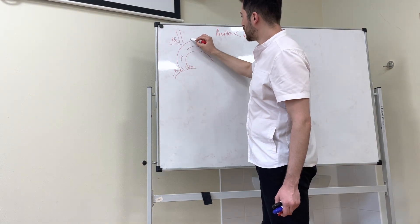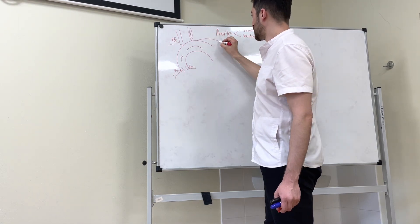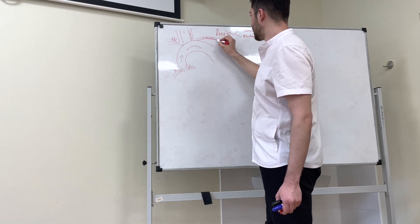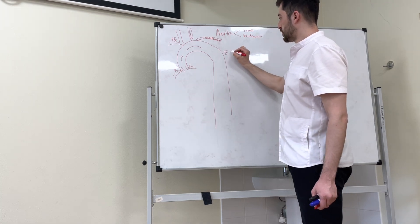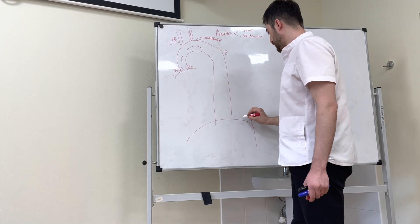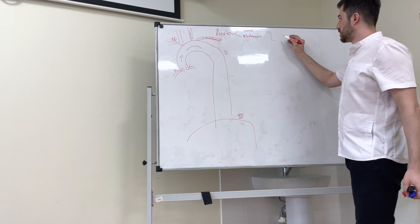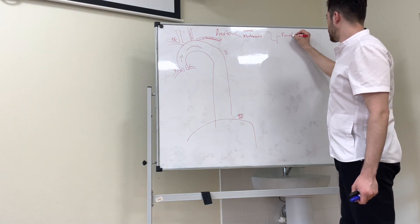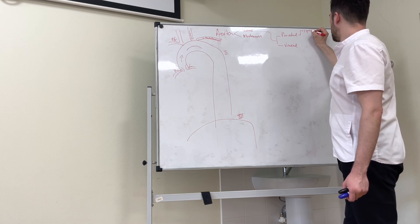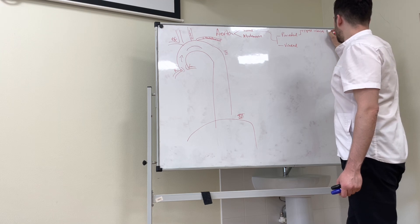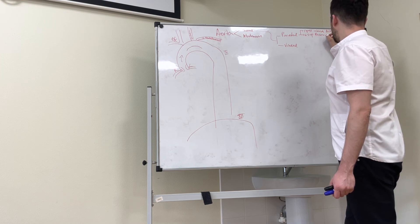In the thoracic aorta, let's talk about the branches. It starts at the level of the fourth vertebra. The first parietal branch is the posterior intercostal artery, and the other one is the superior phrenic artery.